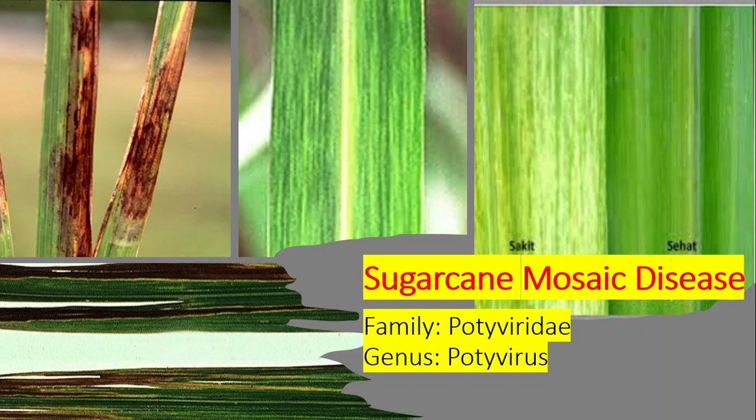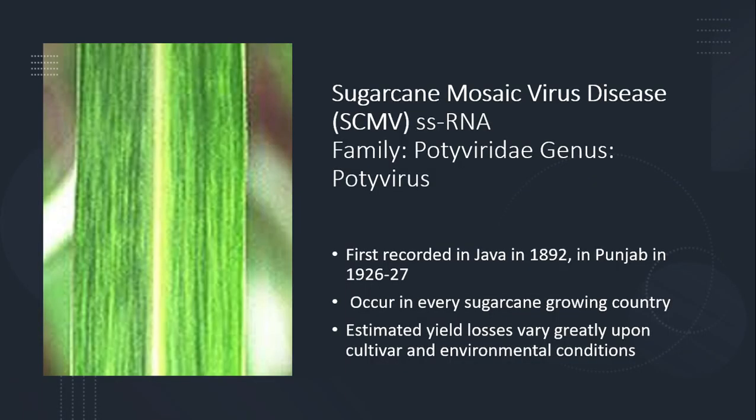The next disease is sugarcane mosaic disease, caused by sugarcane mosaic virus. This is a very important viral disease of sugarcane — a single-stranded RNA virus, first recorded in Java in 1892. In Punjab, this disease was discovered in 1926 and 1927. It has been discovered in every sugarcane-growing country.